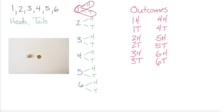Now, if we were asked to find the total number of outcomes, we could count all of these possible outcomes — one, two, three, four, five, six, seven, eight, nine, ten, eleven, twelve — and we'd know that there are twelve different outcomes. Instead of counting, we could also calculate: there are six possible outcomes for the die and two possible outcomes for the coin, so six multiplied by two equals twelve, which is the total possible number of outcomes for rolling one six-sided die and tossing a coin.